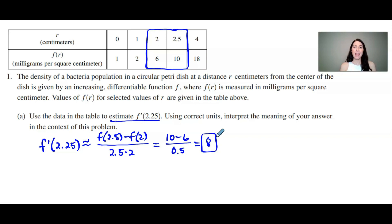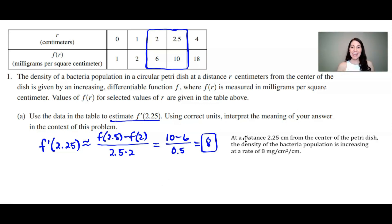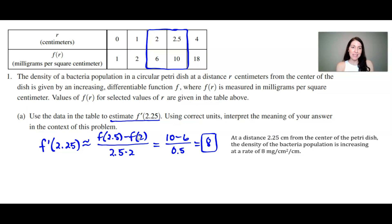So 8 is the estimate of f'(2.25). Using correct units, the meaning is: at a distance of 2.25 centimeters from the center of the petri dish, the density of the bacteria population is increasing — because the estimate of the derivative is positive — at a rate of 8 milligrams per square centimeter per centimeter. The units come from the numerator f(2.5) minus f(2) being in milligrams per square centimeter, divided by the difference 2.5 minus 2, which is in centimeters. So that's why the unit is milligrams per centimeter squared per centimeter.